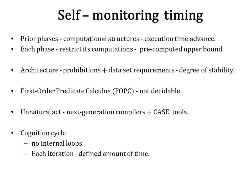In self-monitoring, each of the prior phases consists of computational structures for which the execution time may be computed in advance. Each phase must restrict its computations not to consume more resources than the pre-computed upper bound. The architecture has some prohibitions and dataset requirements needed to obtain an acceptable degree of stability. First-order predicate calculus (FOPC) used in some reasoning systems is not desirable, as one cannot compute in advance how much time an FOPC expression will take to run to completion. The cognition cycle itself cannot contain internal loops; each iteration must take a defined amount of time, just like each frame of the 3G-R interface takes 10 milliseconds.